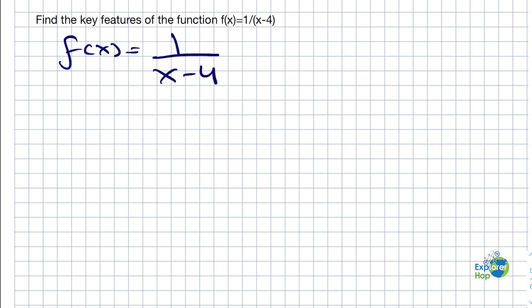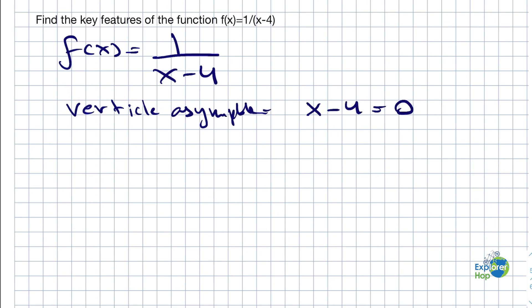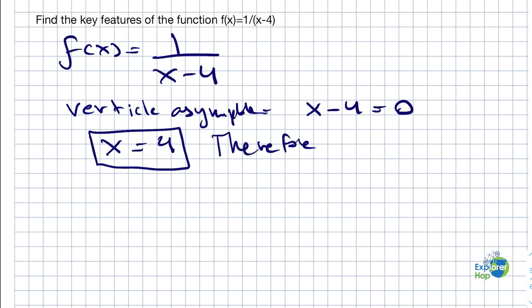To find the vertical asymptote, which is the first thing we will look for, we have to set the denominator equal to 0. Once we do that, we can solve for x and we get x equals 4. Therefore, the vertical asymptote is equal to 4.